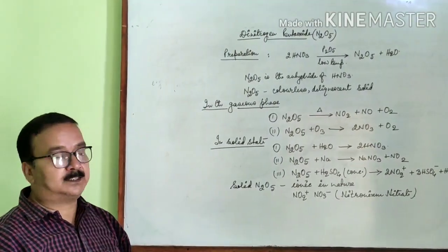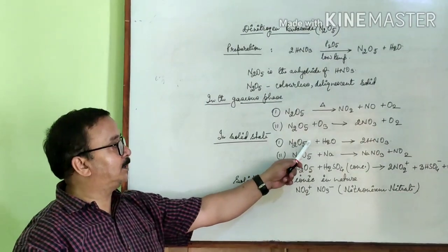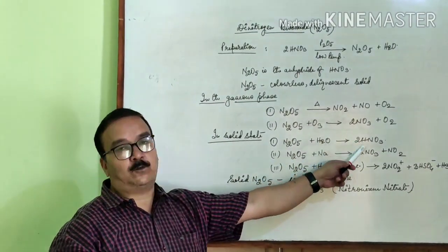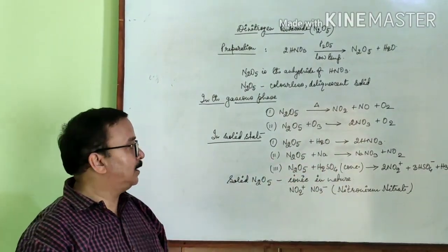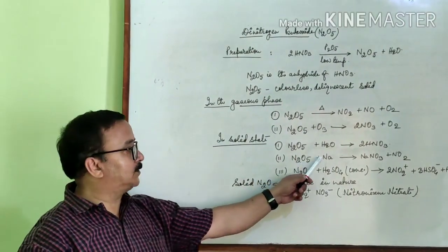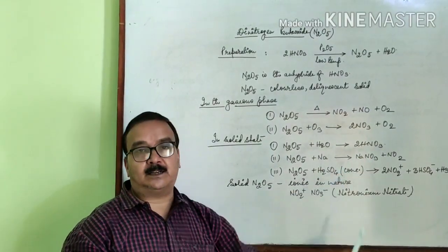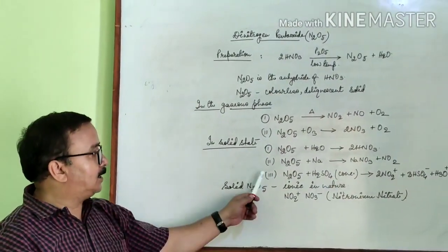In the solid state, the different reactions are: Number one, N2O5 reacts with water to form nitric acid. Number two, N2O5 reacts with sodium metal, forms sodium nitrate and NO2.